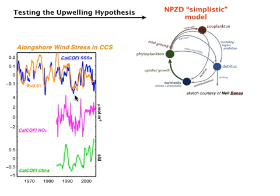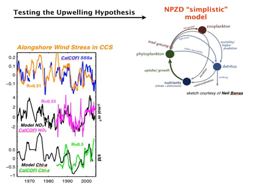We further tested the upwelling hypothesis using an ocean model forced with the NCEP reanalysis, driving a simple ecosystem model with four components — nitrogen, phytoplankton, zooplankton, and detritus — an NPZD model. This model only captures bottom-up control in the ecosystem. When we compare the output of nitrogen and chlorophyll against the CalCOFI data, this very simple model has incredibly high skill in capturing variations in both nutrient upwelling and chlorophyll, suggesting a very basic mechanism of bottom-up control from the physics to the lower trophic levels.